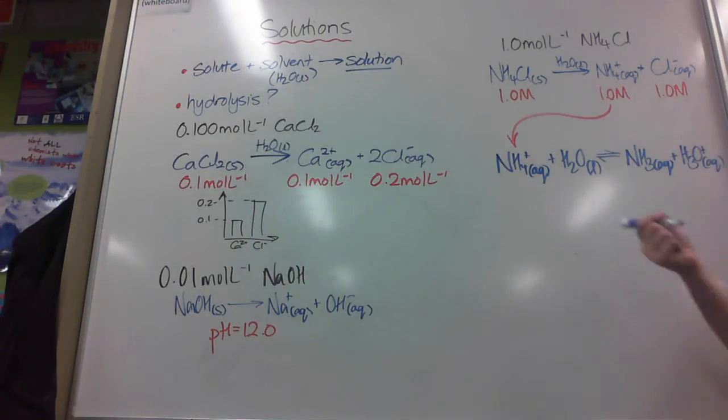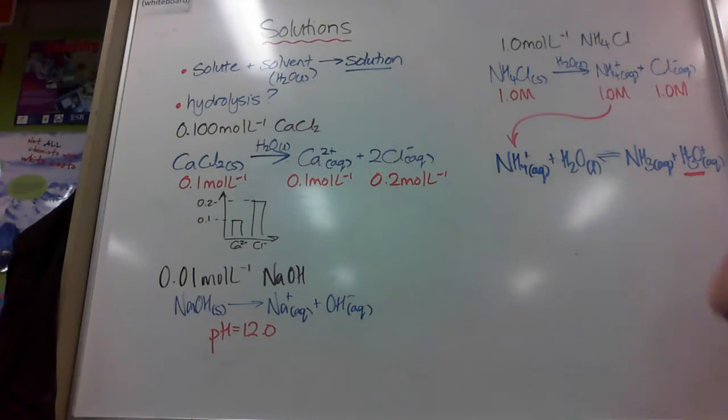So this is one mole per litre and so is this. But this one here, some of it can hydrolyze. You'll notice now water is not just sitting on top of the arrow, it's part of the reaction. It's a reaction with water, hydrolysis. You'll notice that this leads to an increase in hydronium ions. We don't know what it is yet, but it's an increase in hydronium ions. This means it's going to have acidic properties.